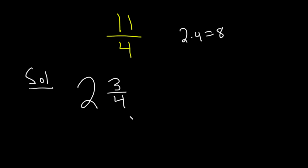So the answer is two and three fourths. And you can check your work: four times two is eight, eight plus three is 11. Boom — there it is. Always works, just multiply and add.